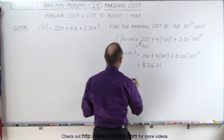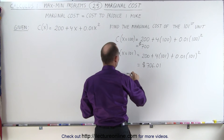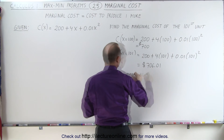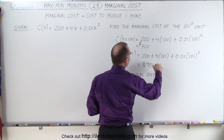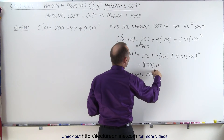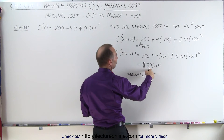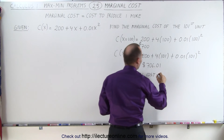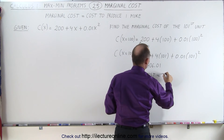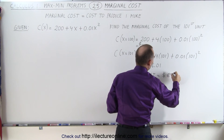Therefore, the marginal cost will be the difference between these two — the cost to produce 101 units minus the cost to produce 100 units. So in this case it would be $6.01.